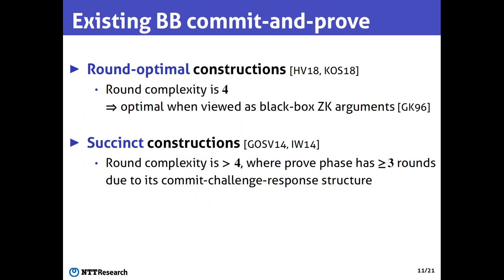This is because the use of a standard argument for NP inherently requires non-blackbox access to the code of the primitive, like commitment schemes. In contrast, a commit-and-prove protocol can be built in a blackbox manner, in the sense that it uses the underlying cryptographic primitive in only a blackbox way. Currently, we already have several blackbox constructions of commit-and-prove protocols, and in particular we have both round-optimal constructions and succinct constructions. The round-optimal constructions have four rounds, and this is optimal in the sense that these constructions can be viewed as blackbox zero-knowledge arguments, which are known to require at least four rounds. However, we currently do not have constructions that are both round-optimal and succinct, and this is what we study in this work.